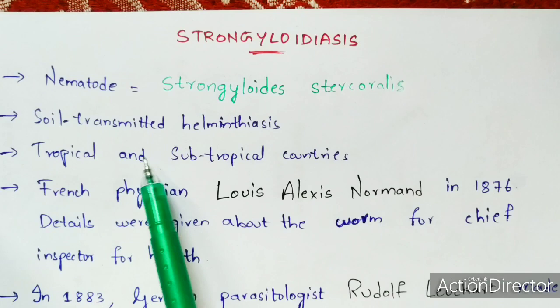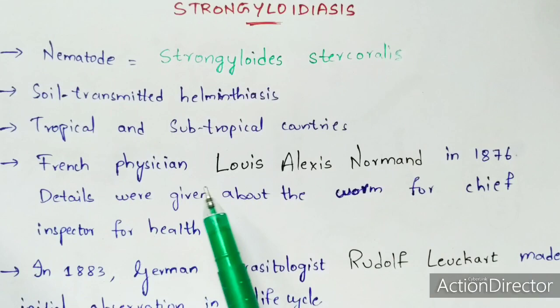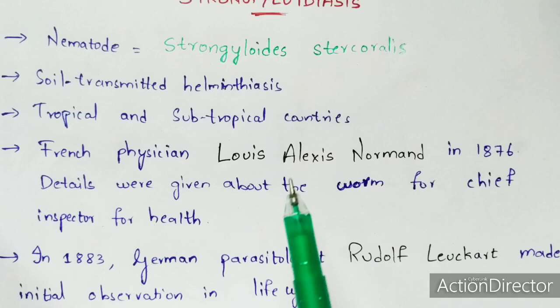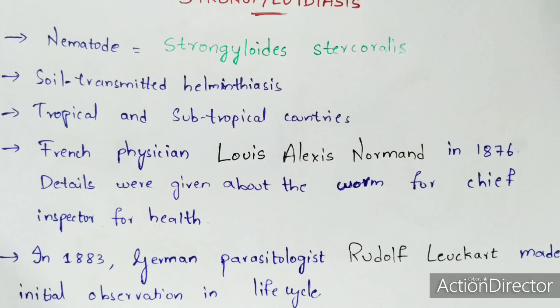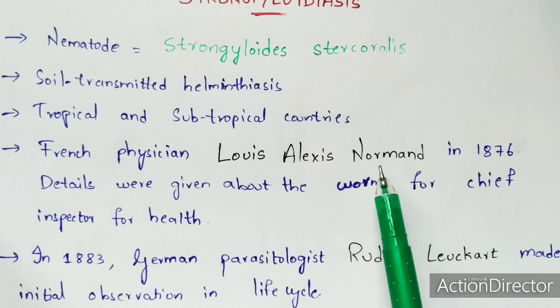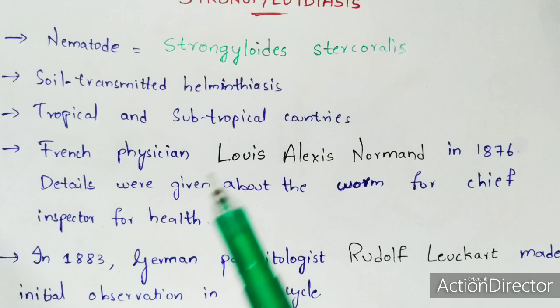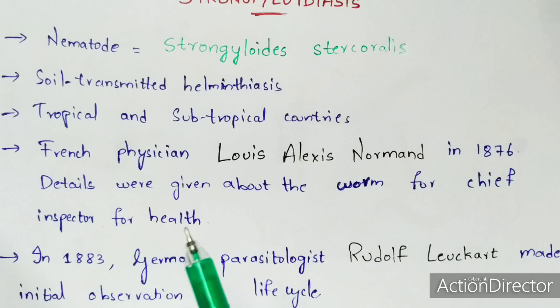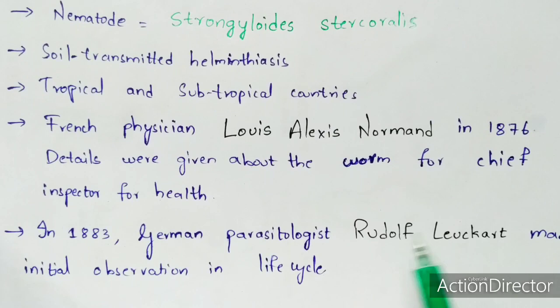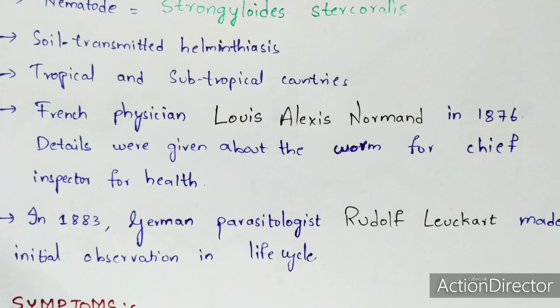Regarding the discovery of Strongyloidiasis: a French physician known as Louis Alexis Normand in 1876 gave the first detailed information about Strongyloides stercoralis — its total size and how the worm survives. He was chief inspector for health in France. However, he did not describe the complete life cycle. In 1883, a German parasitologist known as Rudolf Leuckart made the initial observation of the life cycle and named the disease Strongyloidiasis and the worm Strongyloides stercoralis.